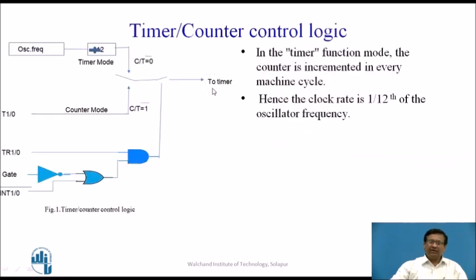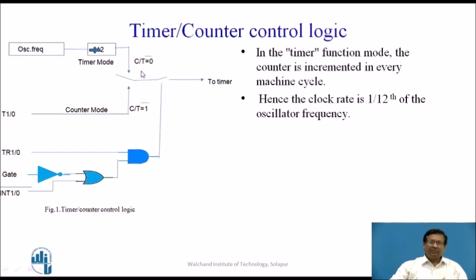The signal goes to the timer or counter and there are two controls. One switch must be on so that whatever signal is on this line will be passed to the timer; otherwise, if this switch is off, the clock to be counted will not go to the timer. If C/T-bar is 0, then timer mode is selected — this switch is connected to the oscillator line, and whatever the oscillator frequency of the system is divided by 12 and it goes to this line. If you want to use it as a counter, C/T-bar must be 1 and the switch position will be moved to the external input line. The signal available is decided by the C/T-bar bit in the TMOD register.